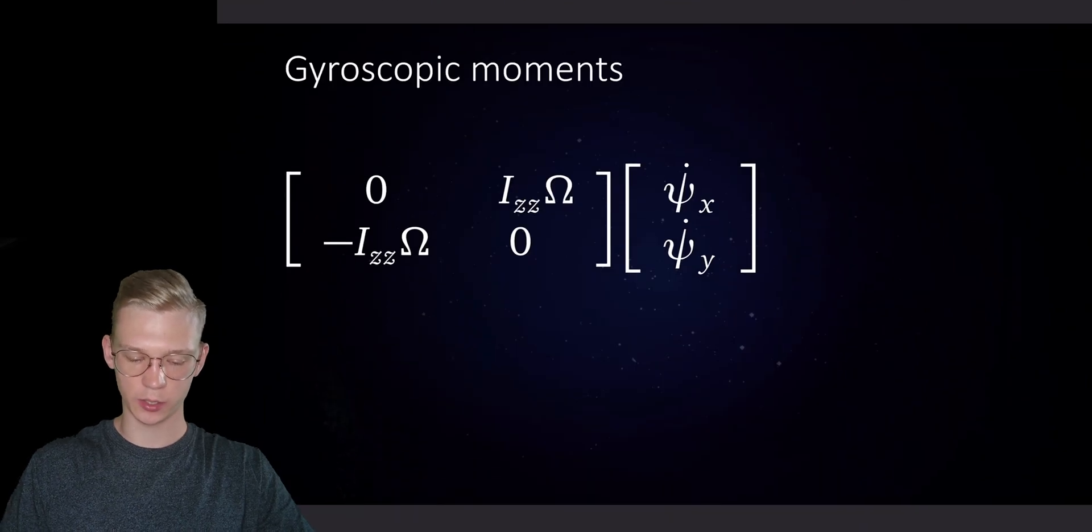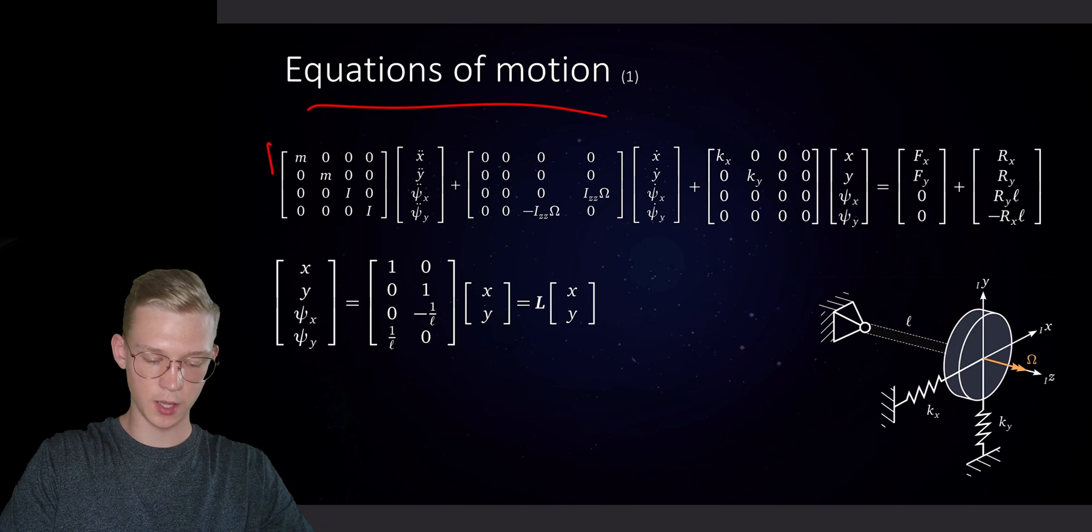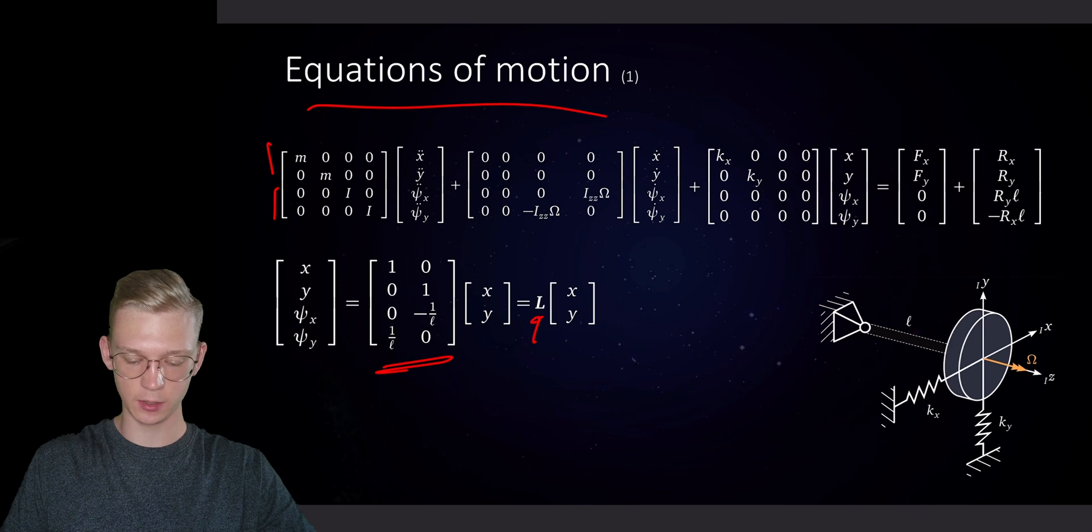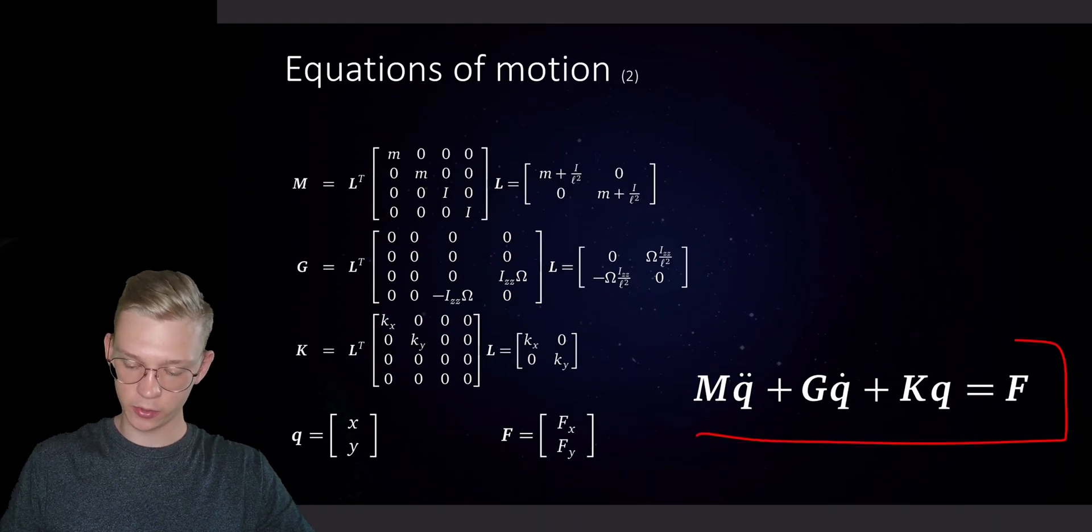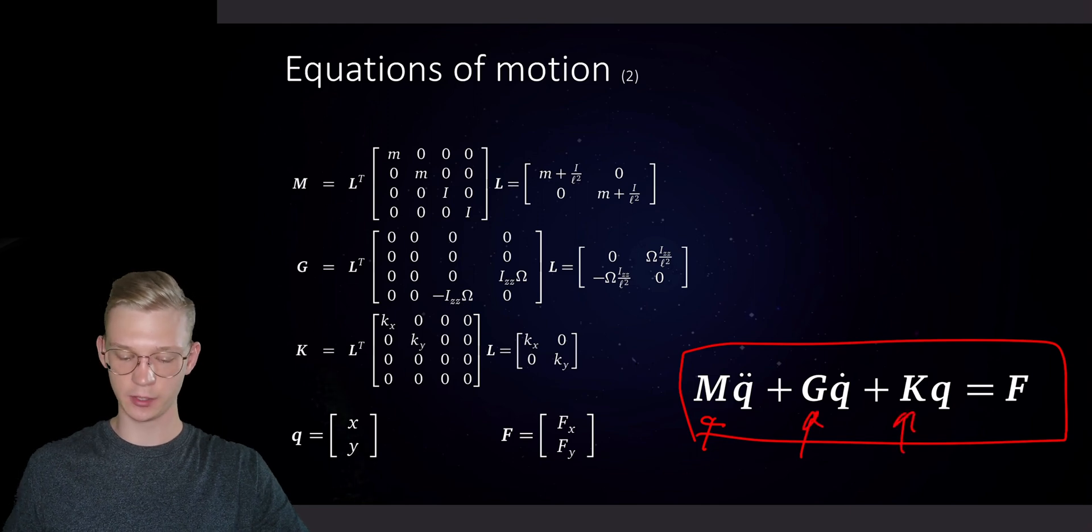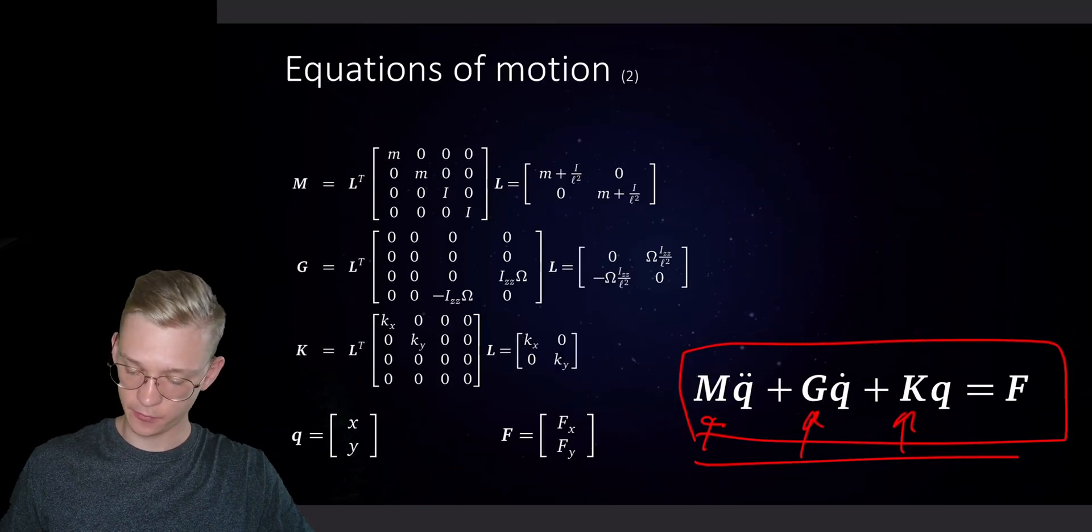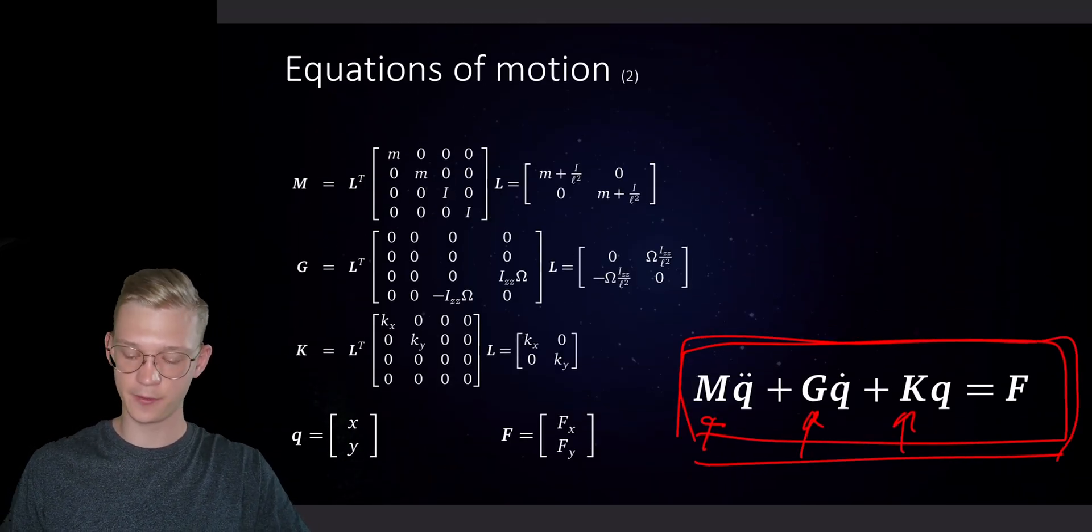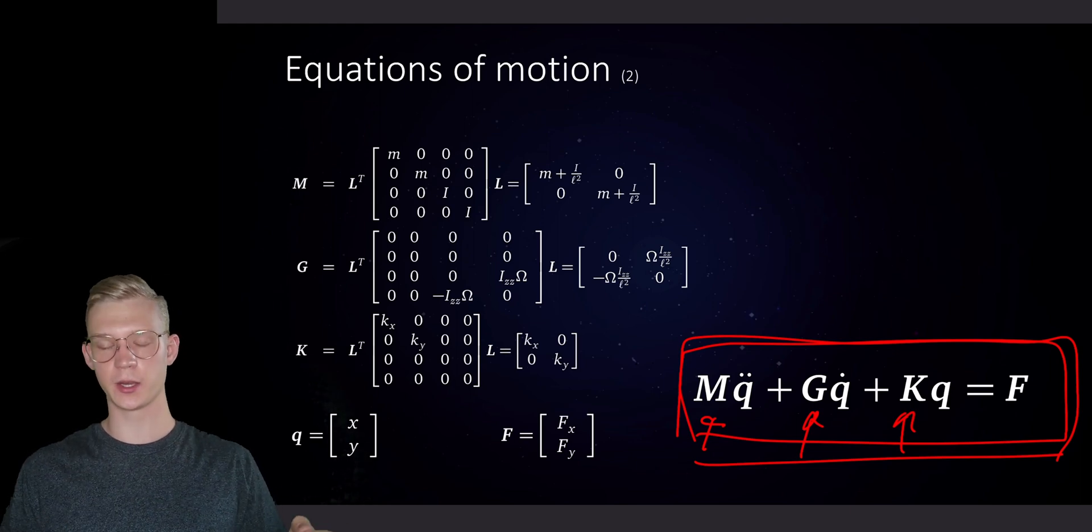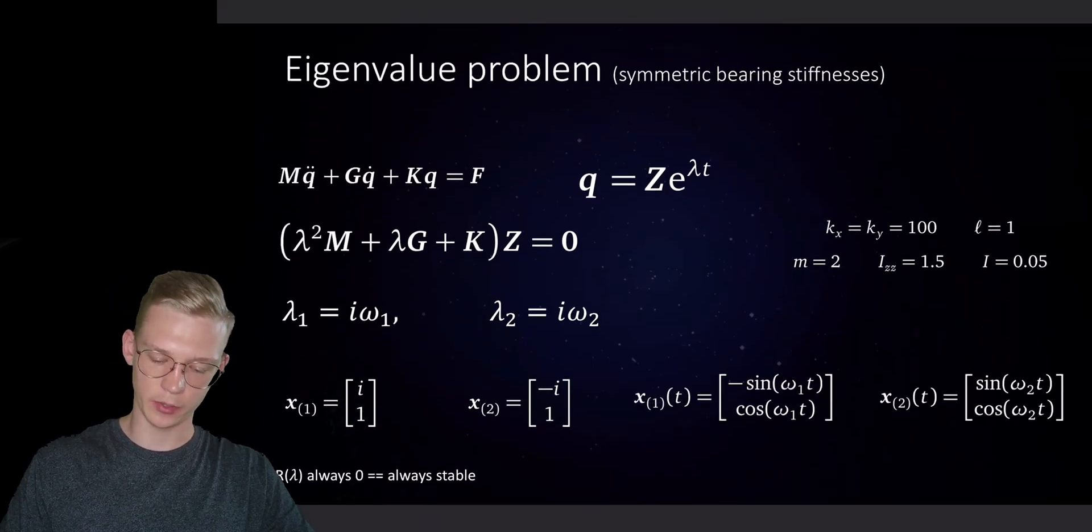So in the last video, we talked about the gyroscopic moments. We got the equations of motion from the Newton and Euler part. Then we did a little projection with our matrix L and got our 2x2 system with our mass matrix, our gyroscopic matrix and our stiffness matrix. And now we want to talk about the eigenvalue problem because we have this system and we know that if we have a system that is moving or vibrating, we can get eigenfrequencies and eigenvectors. So let's talk about it.